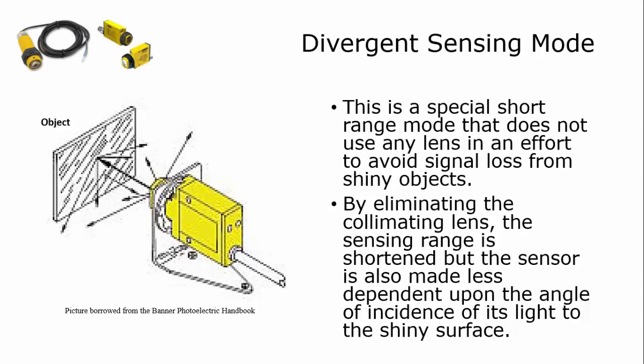The divergent mode of sensing is a special short range mode that does not have a lens on the front of it in an effort to avoid any signal loss if it's sensing shiny objects.